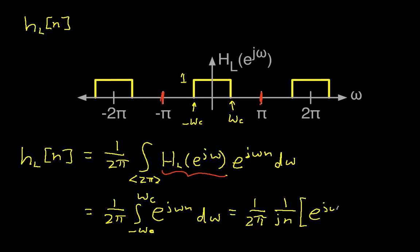Then we'll have e to the j omega n evaluated at the limits: e to the j omega c n minus e to the minus j omega c n. So this is the upper limit and the lower limit. And you look at this and immediately think to yourself, this looks like 2 j sin omega c n. That's just Euler's formula.